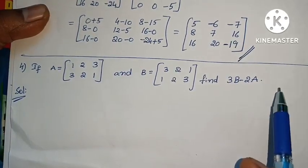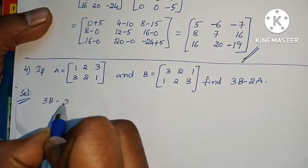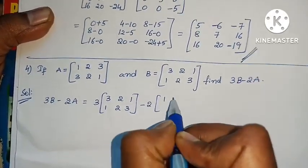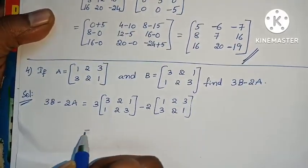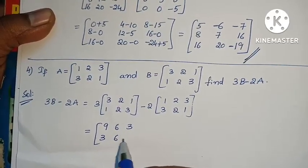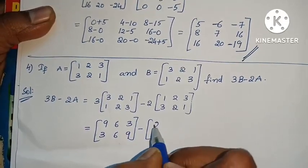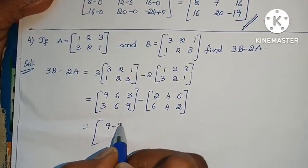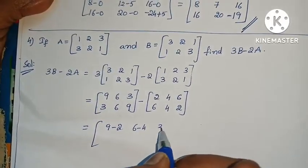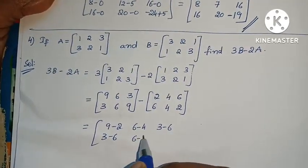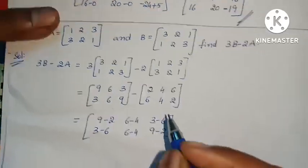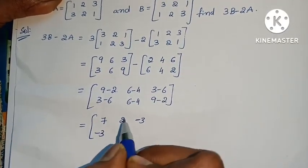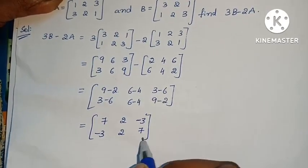Given A and B matrices, find 3B minus 2A. Compute 3 into B: 3×3=9, 3×2=6, 3×1=3, 3×1=3, 3×2=6, 3×3=9. Minus 2 into A: 2×1=2, 2×2=4, 2×3=6, 2×2=4, 2×1=2. Subtracting: 9 minus 2, 6 minus 4, 3 minus 6, 3 minus 6, 6 minus 4, 9 minus 2. Answer: 9 minus 2 is 7, 6 minus 4 is 2, 6 minus 3 is 3, minus, 6 minus 3 is 3, 6 minus 4 is 2, 9 minus 2 is 7. Problem complete.